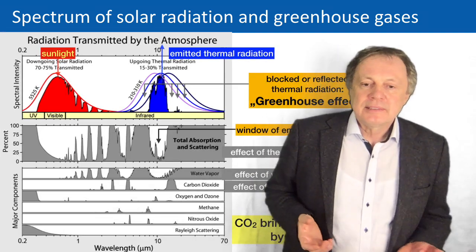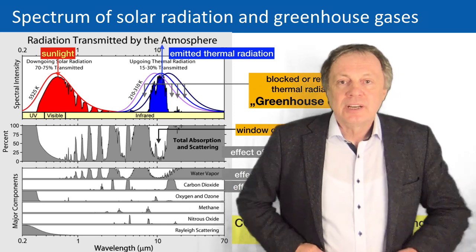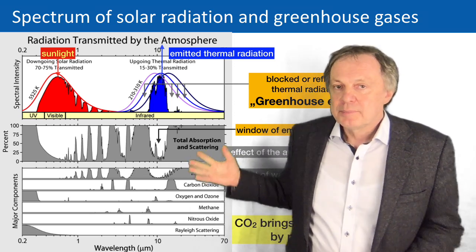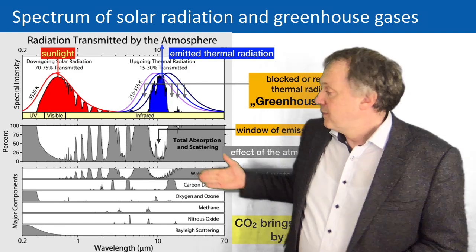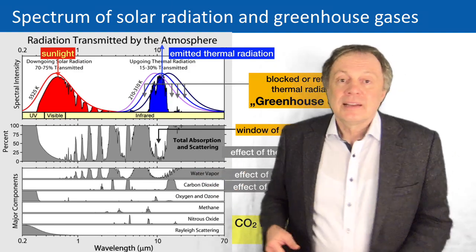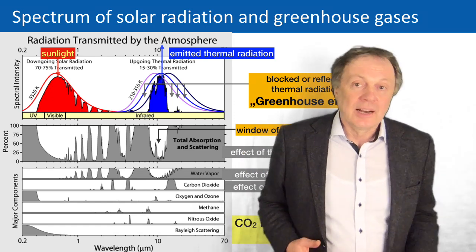For completeness, there are also other gases important in the atmosphere. You have oxygen and ozone — their main effect is that they completely block the hard ultraviolet light, which is very important. Then you have Rayleigh scattering, which is important for changing the color of the sky.